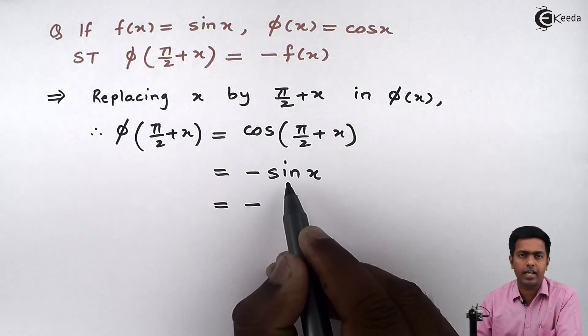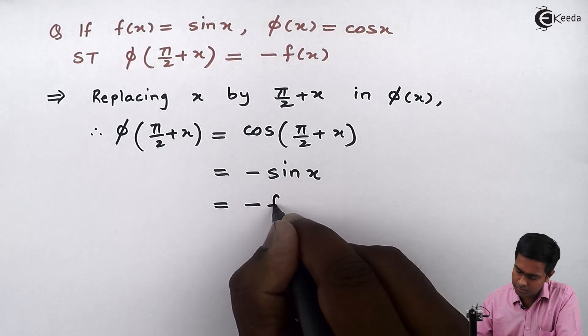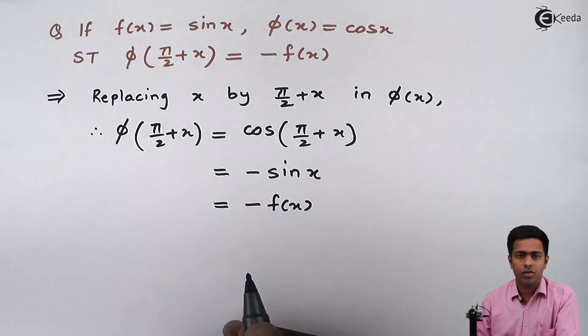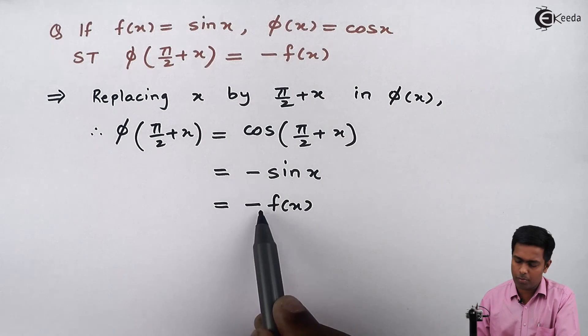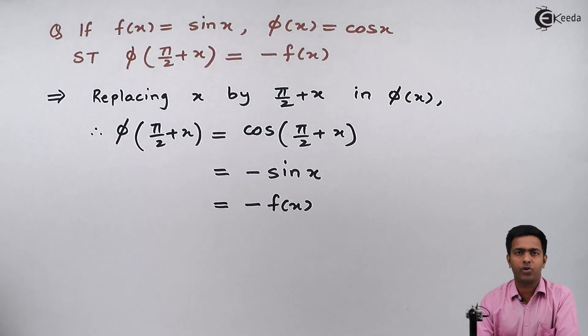So I can replace this sin x by f(x), and hence we get φ(π/2 + x) equal to -f(x) as required. Thank you.